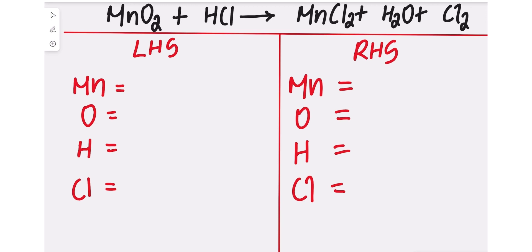To start, we're going to write the number of atoms on the left-hand side and right-hand side for each element. On the left-hand side we have 1 manganese, 2 oxygen, 1 hydrogen, and 1 chlorine. On the right-hand side we have 1 manganese, 1 oxygen in H₂O, 2 hydrogens, and 4 chlorine atoms.